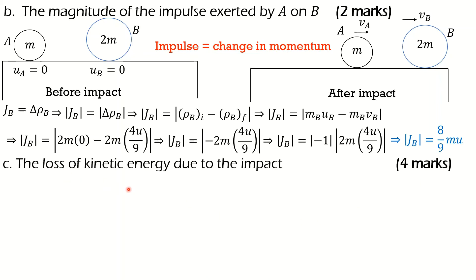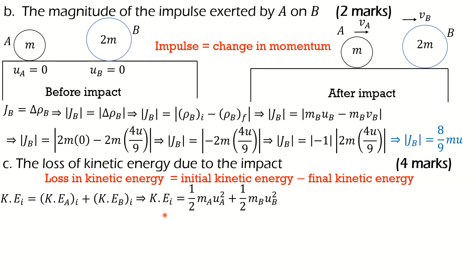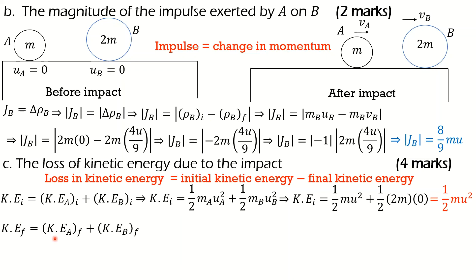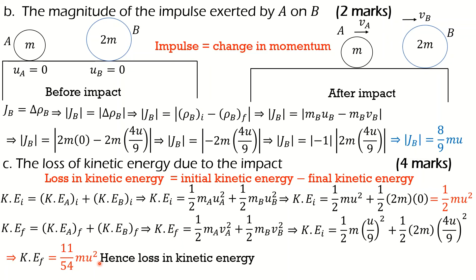Part C asks us to find the loss of kinetic energy due to the impact, allocated 4 marks. The loss in kinetic energy equals the initial kinetic energy minus the final kinetic energy. The initial KE is the KE of A plus KE of B initially: ½MU² + 0 = ½MU². The final KE is ½M(VA)² + ½(2M)(VB)², using VA = U/9 and VB = 4U/9, which simplifies to 11MU²/54. Therefore the loss in kinetic energy is ½MU² − 11MU²/54 = 8MU²/27.